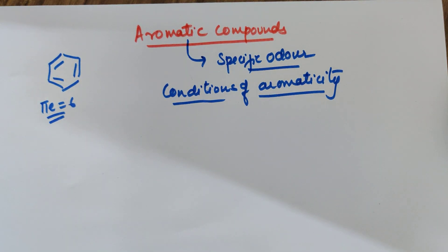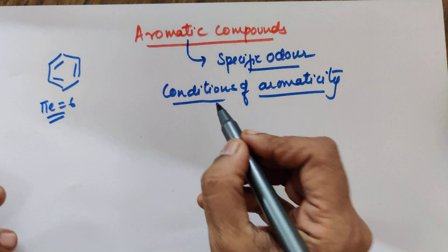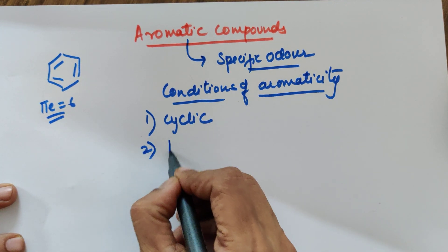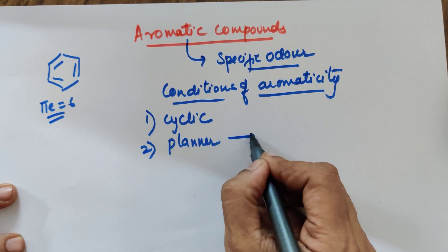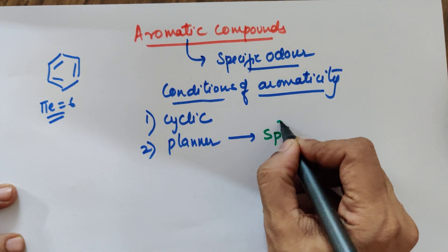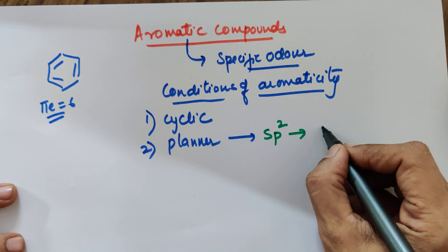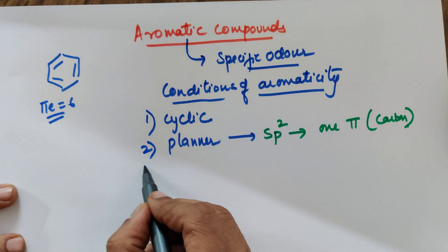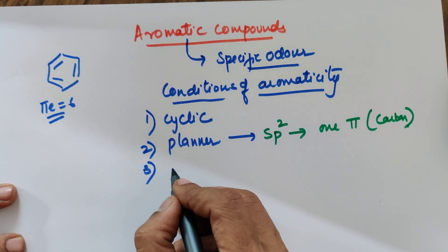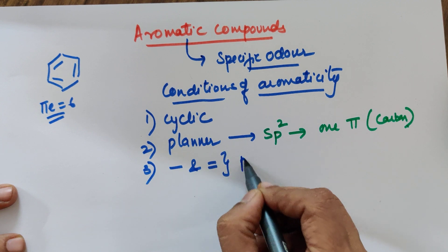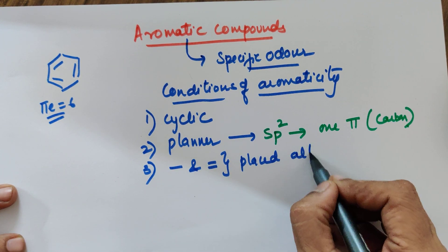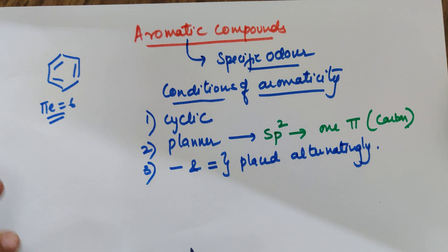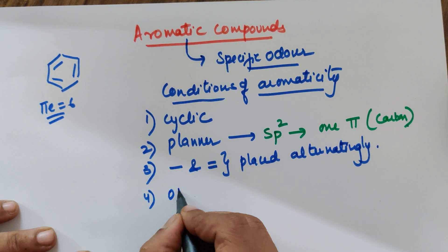The pi electrons in benzene are six. For any aromatic compound, the conditions of aromaticity are: first, it should be cyclic; second, it should be planar — by planar we mean the hybridization should be sp2, which means each carbon should have at least one pi bond; third, single and double bonds are placed alternatingly in such compounds.